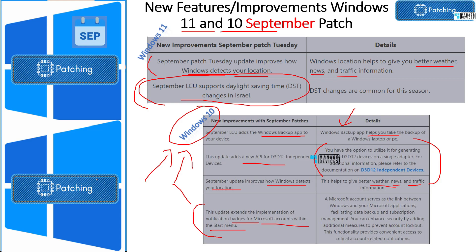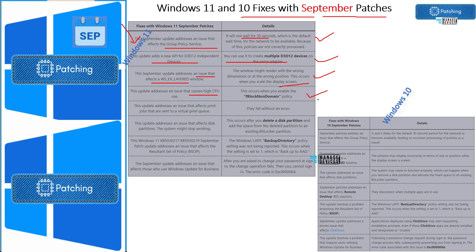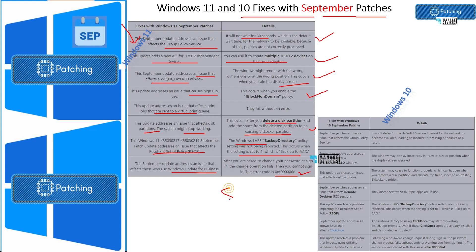These are the significant improvements for Windows 10 and Windows 11 as part of September Patch Tuesday. Now let's look into fixes coming with September patches for Windows 11. There are Group Policy service related fixes. September patches address an issue that affects layered windows, which has now been fixed. There was also an issue with high CPU usage that got fixed with September Patch Tuesday. Disk partition related issues also got fixed, and Windows Update for Business related error 0x0000006D also got fixed with September patches.